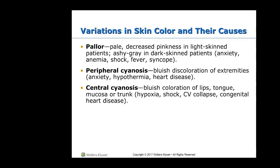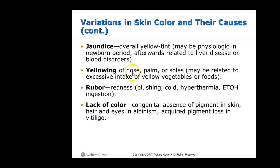Regarding variations in skin color and lesions: describing things accurately in nursing is very important. You need to be able to accurately describe skin color — terms like 'pale' may mean different things to different people. Be familiar with cyanosis, central versus peripheral cyanosis, and jaundice. Go find pictures or videos of kids with jaundice or pallor on YouTube because the presentations vary — it's not just pale yellow.